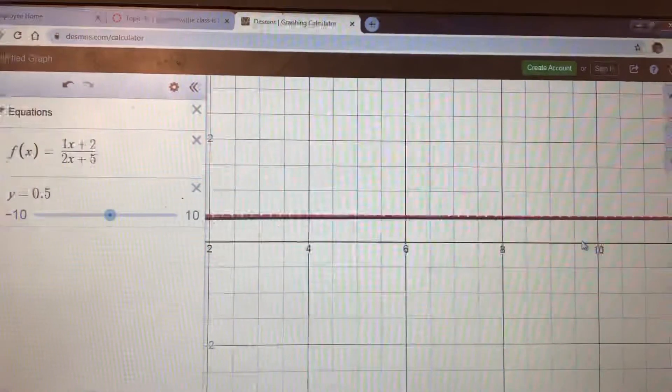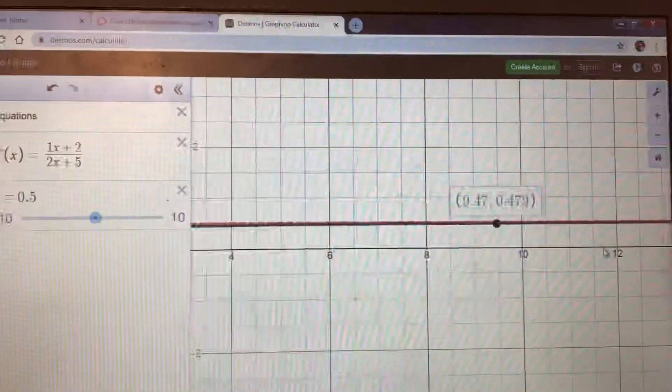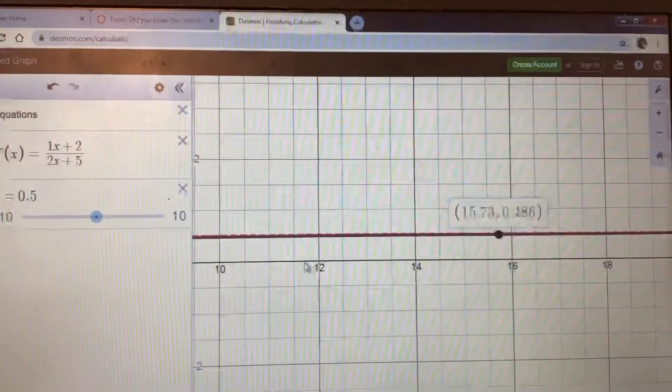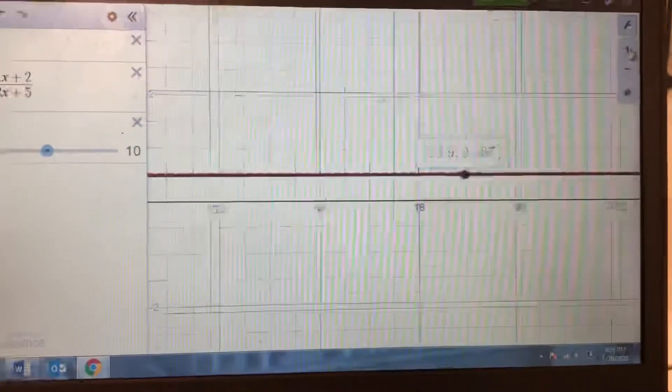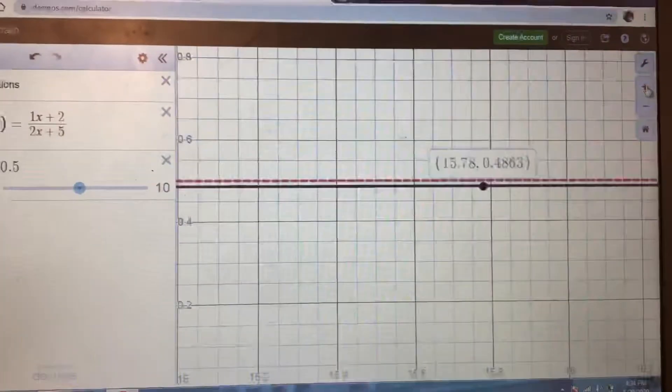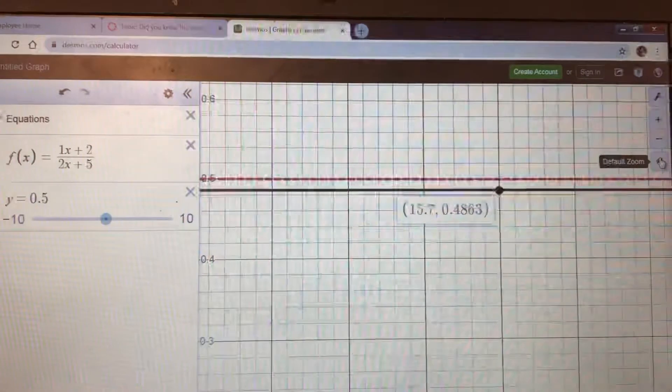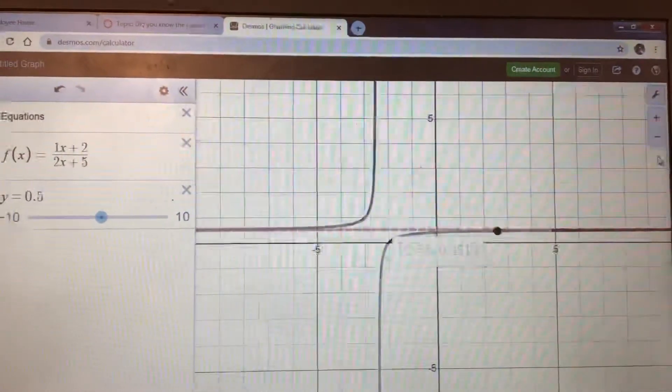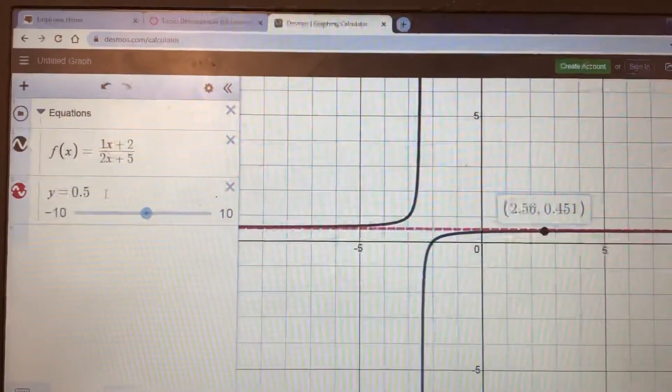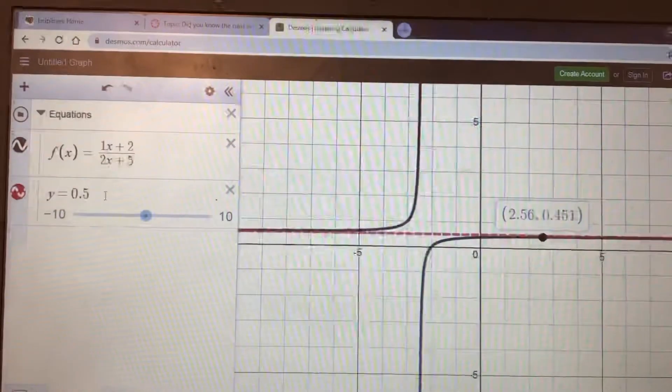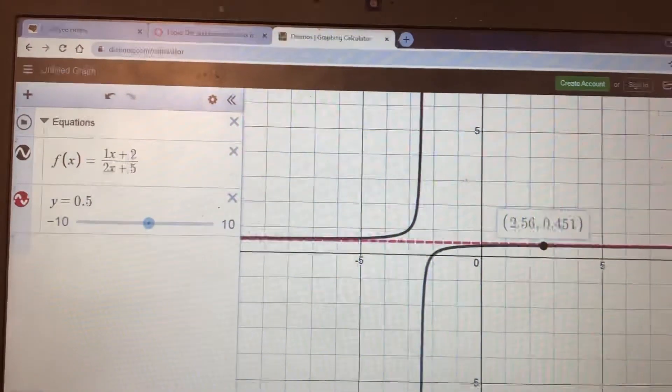We can check by going way out here and zooming in to see if there's a gap between them. Looks like there is, so it's not actually crossing and it's just getting closer to it. Okay, so where are we? We're at 0.5. Well, that's just a half. Wait, do you see where a half is in here?